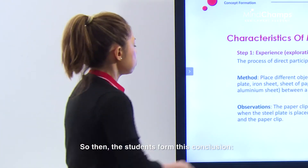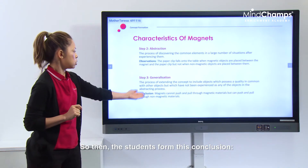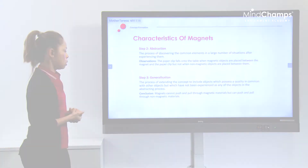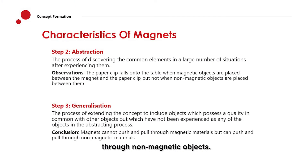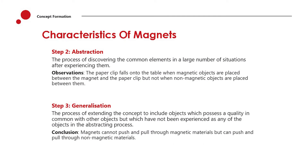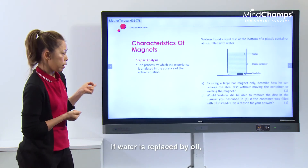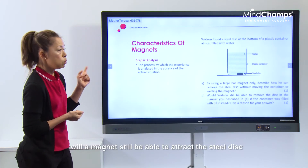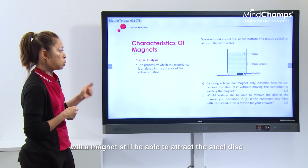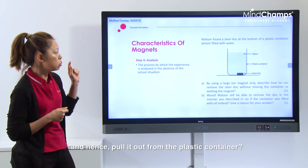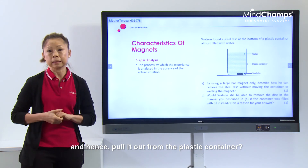So then the students form this conclusion: magnets can attract and repel through non-magnetic objects, but not magnetic ones. This question on the concept asks, if water is replaced by oil, will a magnet still be able to attract the steel disc and hence pull it out from the plastic container?